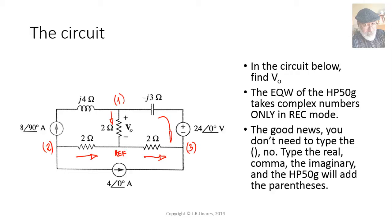The first thing is to take those phasors and write them in rectangular mode. 8 amps at 90 degrees is (0, 8). 24 volts at 0 degrees is just 24 — I don't even bother writing that as (24, 0). And 4 amps at 0 degrees is just 4.